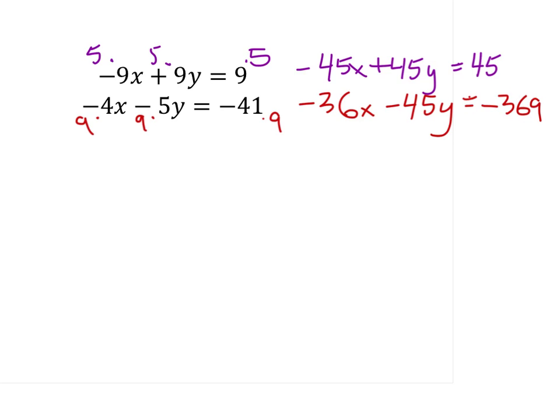Now what we can do from here is to—I apologize, let me fix that. We can eliminate the y's, right? 45y minus 45y, that just becomes a 0 there. And if we take -45x and subtract 36x, that gives us -81x.